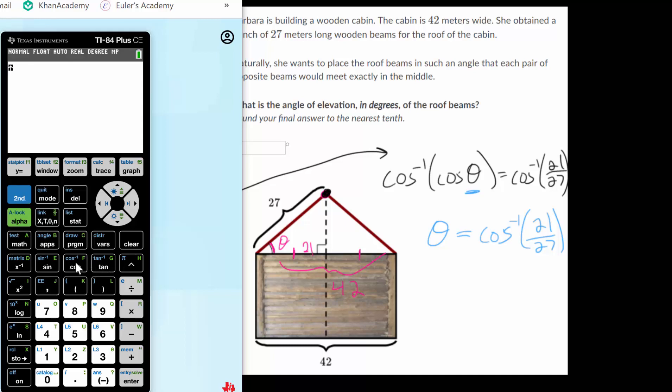So second, and then inverse cosine. We'll put in our 21 divided by 27, and this should give us our missing angle.